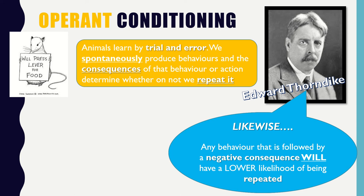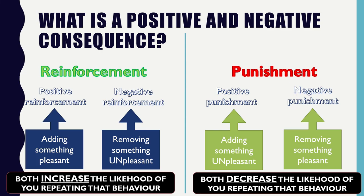Likewise, Thorndyke also argued that any negative consequence to an action will lower the likelihood of it being repeated. Again, it's not certain, but it takes the likelihood down. So any positive consequence will normally result in repetition, and any negative consequence will result in a behaviour being avoided and thus not repeated.